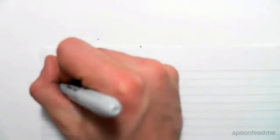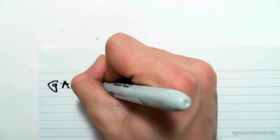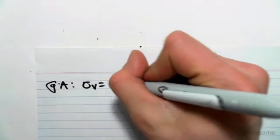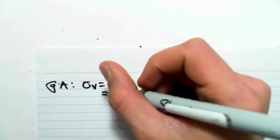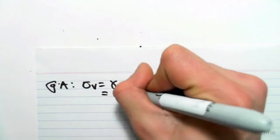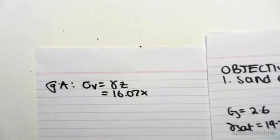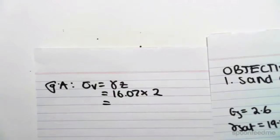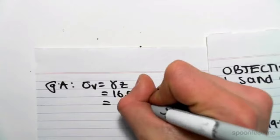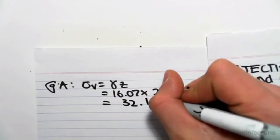So our total stress, at point A, our total stress will equal gamma Z, where gamma is gamma dry, so 16.07, times by Z, which is the depth. It's 2 meters, so times 2.